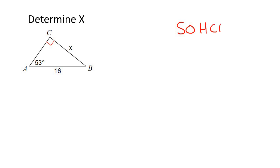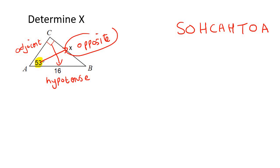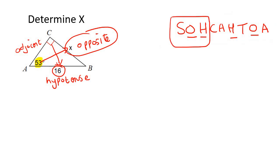So we start off with SOH-CAH-TOA and go find the angle that they've given us, which is the 53. Go label your triangle now. The side opposite the angle is always called the opposite. The side opposite the 90 is always called the hypotenuse, and then the other side is the adjacent. What we're looking for is the opposite, and what we already have is the hypotenuse — so which of these has the most information? It's definitely sin again.